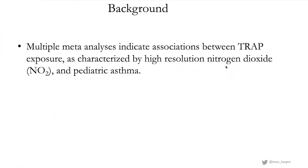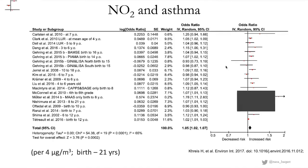Multiple studies conducted around the world, summarized in meta-analyses, show associations between traffic-related air pollution — especially as characterized by high-resolution measurements or estimates of nitrogen dioxide — and pediatric asthma. This means new cases of asthma in young children: air pollution not as a trigger for existing asthma, but actually causing new cases. One example is a meta-analysis published in 2017 by Hannacruz showing an increased risk of asthma associated with exposure to nitrogen dioxide in most studies.